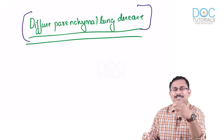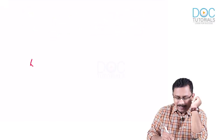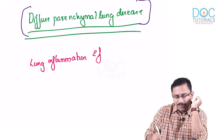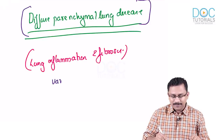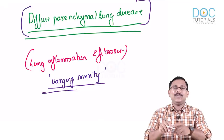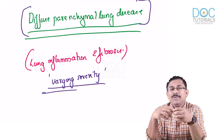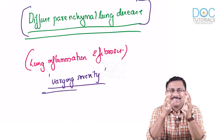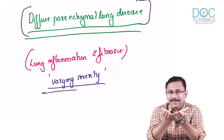You are going to have lung inflammation and fibrosis — but of varying severity. I already told you that ILD is not a single disease; it is a group of disorders. Certain disorders will be more fibrosing compared to other subtypes, but all in all you will have inflammation and fibrosis of varying severity. So first we have understood what this entity is.